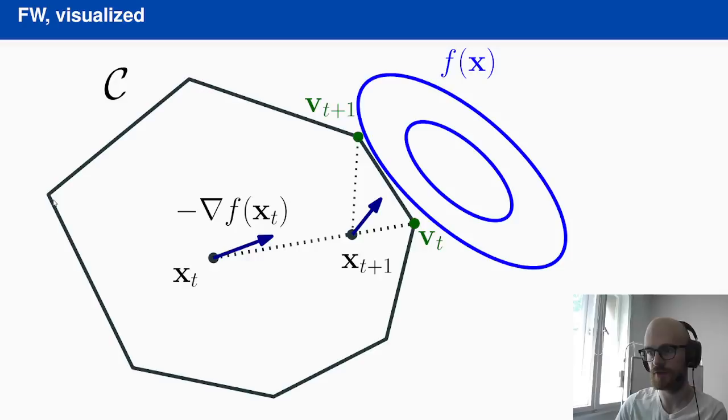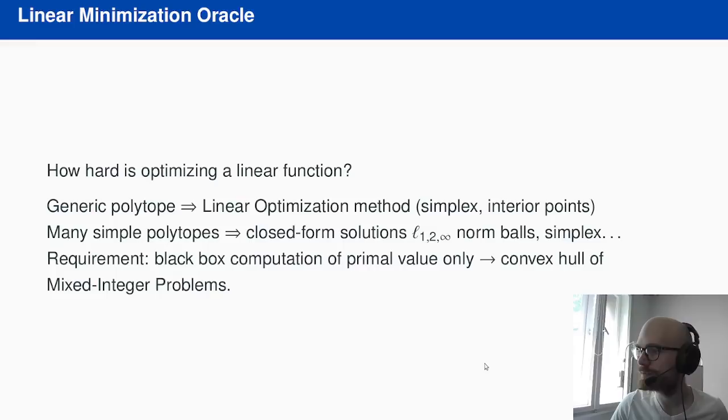One interesting property you might notice: if you start from an extreme point, if your x0 is an extreme point of C, given that you just add some convex combination of the current iterate and some other extreme point, by recurrence, all the iterates of the Frank-Wolfe algorithm will be some convex combination of extreme points of C, which might be very interesting for some properties like sparsity of the iterate. If all of your extreme points are sparse, then you have more chance of having a sum of them being also sparse.